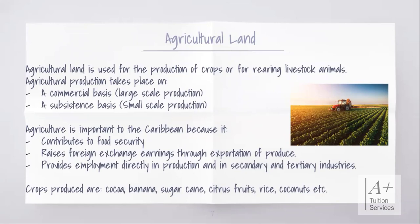Agricultural land is used for the production of crops or for rearing livestock animals. Agricultural production takes place on a commercial basis — large-scale production where crops are produced for sale and further production of goods and services — and also on a subsistence basis, or small-scale production for the local market or community. Agriculture is important to the Caribbean because it contributes to food security, raises foreign exchange earnings through exportation of produce, and provides employment directly in production and in secondary and tertiary industries. For example, you can pick a tomato, sell it to a company that makes ketchup, and they sell it as a final product in a grocery store.